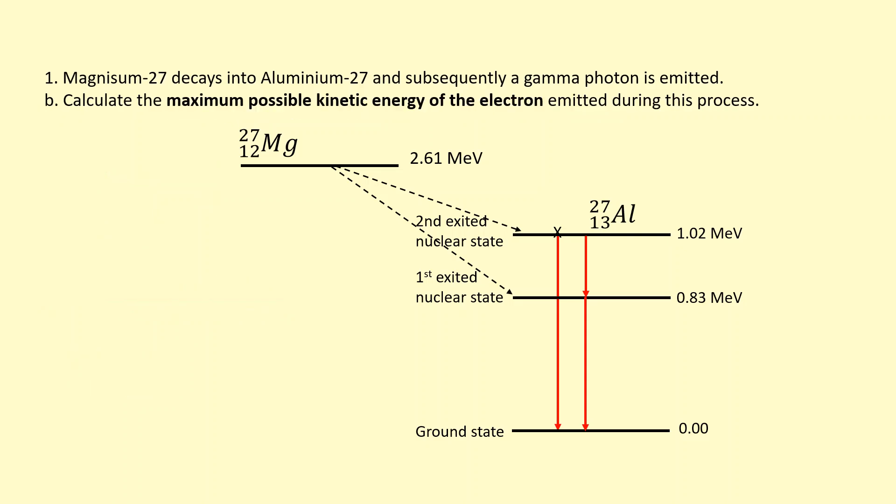In this question we're asked to calculate the maximum possible kinetic energy of the electron that's emitted. So that's the electron that comes from the beta decay of the magnesium-27. So the maximum possible energy would be straight from here to the ground state.